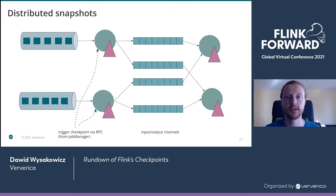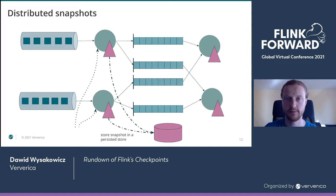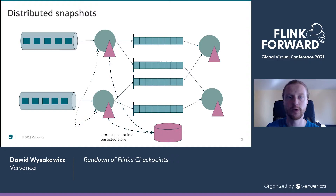Periodically, from the checkpoint coordinator which resides within the job manager — the single coordinator of the entire pipeline — we send messages to all of the source operators that they should begin creating a snapshot of the state. As soon as that comes through the RPC call, all of the source operators take a copy of their state and store it in a distributed storage system. Once they do that, they emit barriers downstream so that within the network channels, they flow through the graph in exactly the same manner as all other regular records being processed in the pipeline.